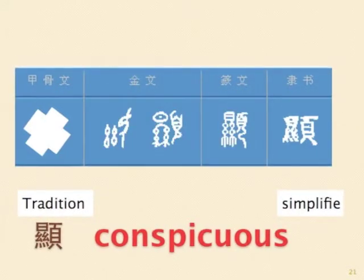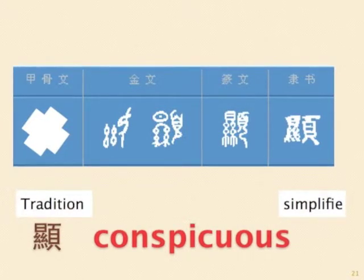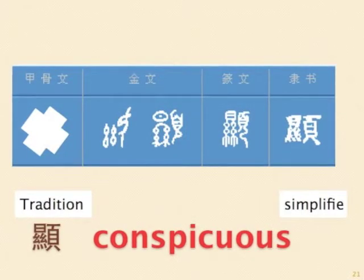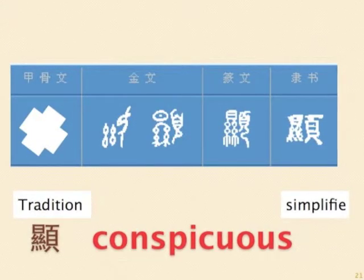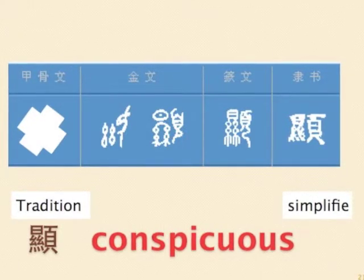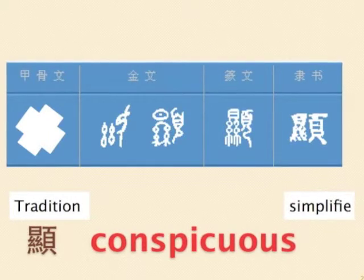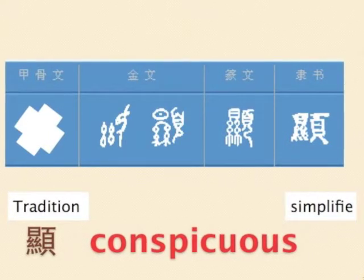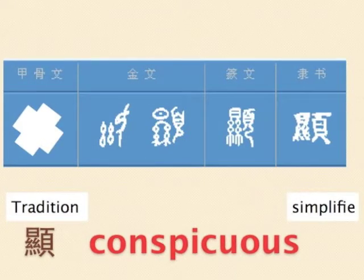Next word: conspicuous. The left side of the ancient word stands for silk under the sun, while the right side represents the head of a person. Together, it means a person can see thin silk clearly because of sufficient sunlight. The simplified form keeps the left side and simplifies the silk part.